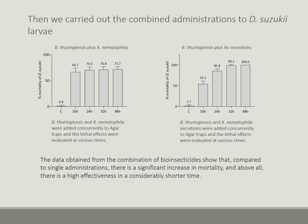Given that results obtained with single treatments were not sufficiently satisfactory, we tested the combined administration of Bt plus Xn, and Bt plus Xn secretions. The data obtained showed that the combination of Bt plus Xn induced mortality of about 70 percent at 32 hours post-treatment. Moreover, the administration of Bt plus Xn secretions already at 32 hours led to a mortality of more than 99 percent, and at 48 hours induced the total mortality of the treated larvae.